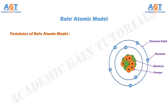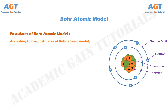What are the postulates of the Bohr atomic model? Before talking about that, from Rutherford's atomic model we know that electrons revolve around the nucleus in fixed orbits, and the nucleus is formed of neutrons and protons. But Rutherford's model didn't explain anything about the stability of the atom and the proper arrangement of electrons in the orbits. So we will get this idea from the Bohr atomic model.